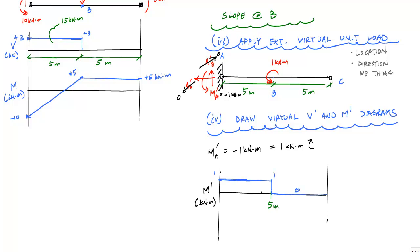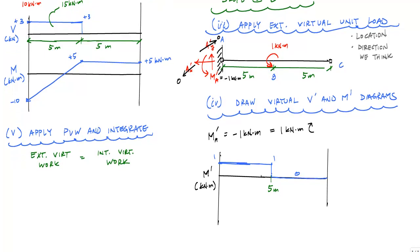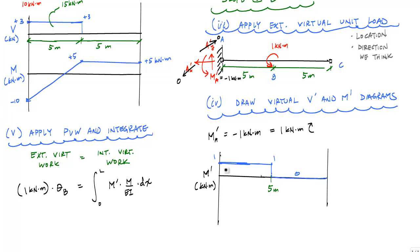Now that I have the virtual and real moment diagrams, I'm ready to apply the principle of virtual work and integrate. The external virtual work equals the internal virtual work. For slopes, this means 1 kilonewton-meter times the slope at B equals the integral over the entire beam length of the virtual moment times the real internal curvature dx. Importantly, no matter where you're looking for the displacement, you must integrate over the total length of the beam to account for all the energy in the beam.